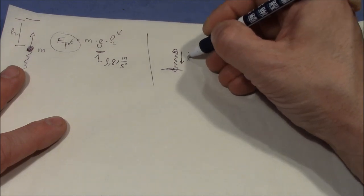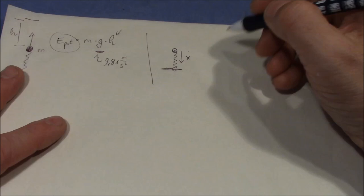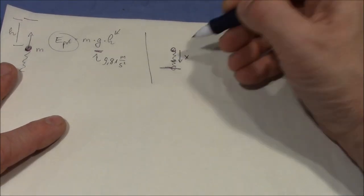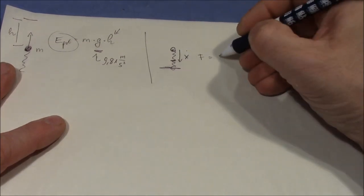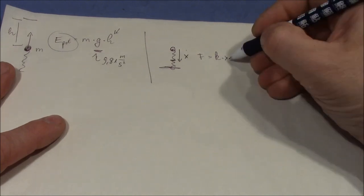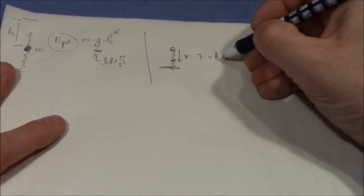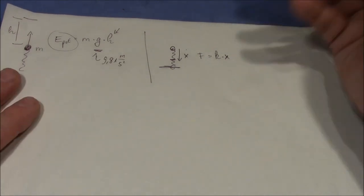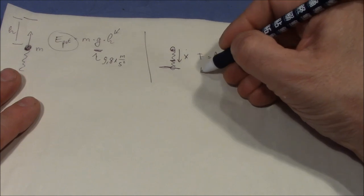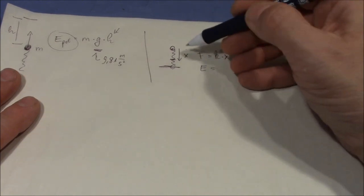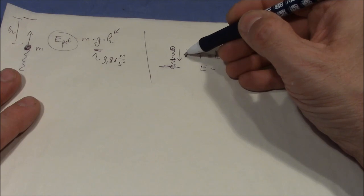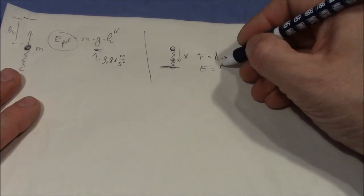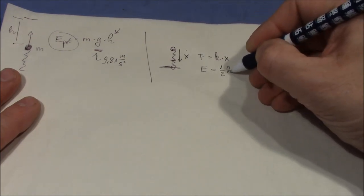We know that the force at this point of the compression is k times x, where k is an unknown constant that is specific to the spring. We do know that the energy that we put in the spring by compressing it by the distance x is one half k x squared.